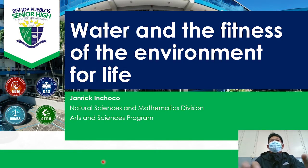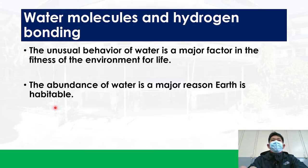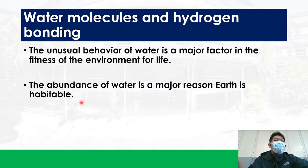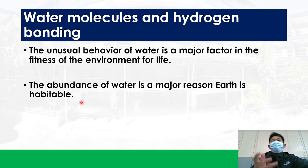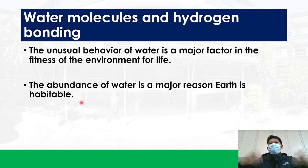Hi and welcome back to biology. Today we're going to have a short talk about water and its role in the fitness of the environment for life. We all know that water is one of the most abundant substances here on earth, which makes earth habitable. From grade school to junior high, and from conservation advocates to environmentalists, we always say that water is life. But what makes water a major factor in the fitness of the environment for living things?